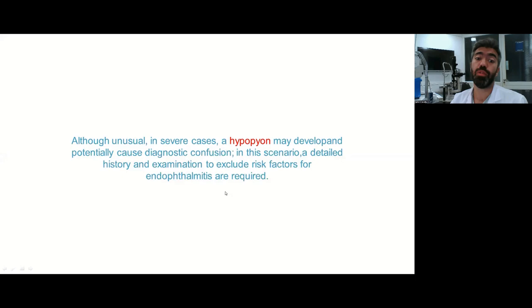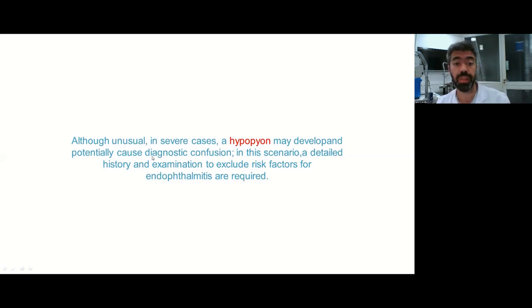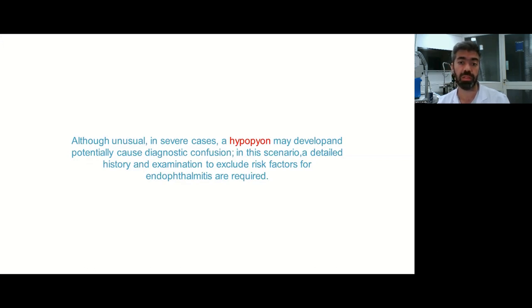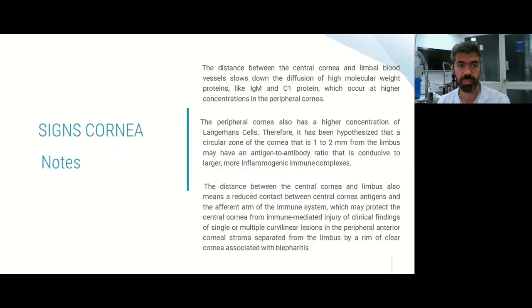Although unusual, in severe cases you can have hypopyon. You may need to consider another cause that can be infectious or not. This scenario is concerning, but awareness of patient history and proper examination will help diagnose whether it's a case of endophthalmitis or not. We'll now be able to see the difference between infectious and non-infectious pathology, with some tips and notes on corneal signs available to read after class.